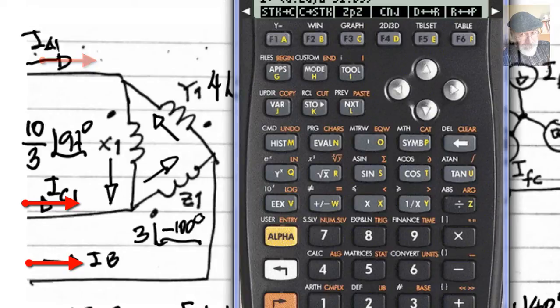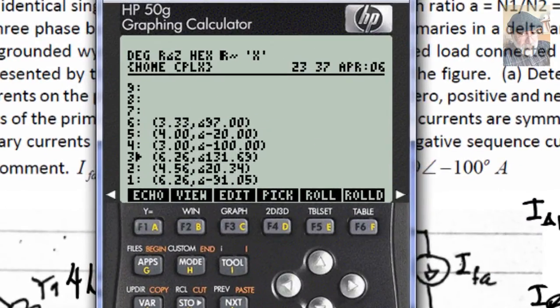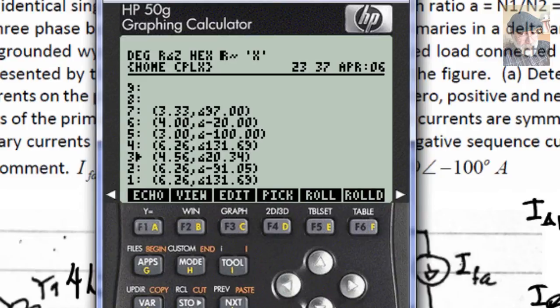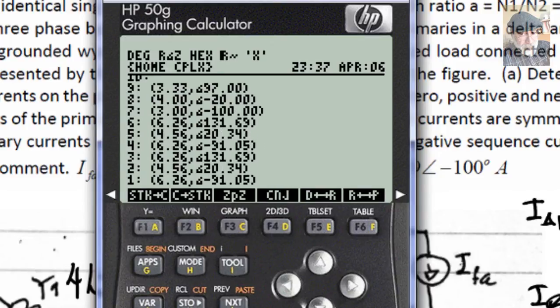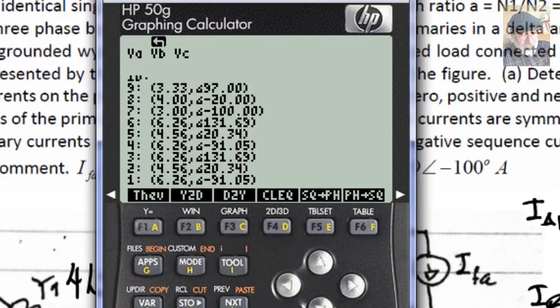And then what? And then we had to find the 0, the positive, and the negative sequence currents corresponding to those three line currents, A1, B1, and C1. Well, all we do is we duplicate all those by picking them. Pick, pick, pick. Those, so I have another copy of them. And I use another little program that converts between phases and sequence, phases and sequence, space, continue.